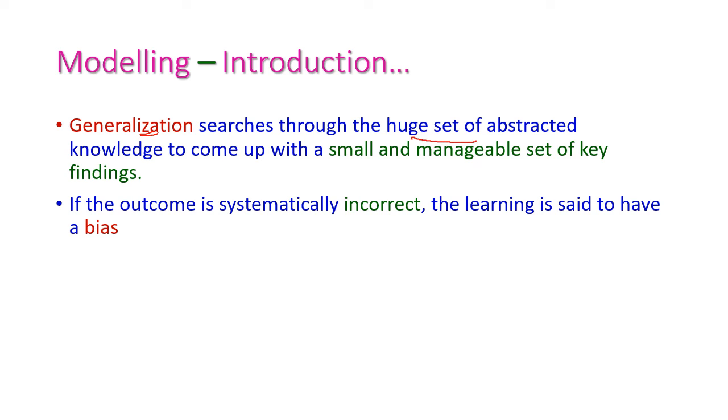And next is generalization. Search through the huge set of abstracted knowledge to come up with small and manageable set of key findings. Abstraction and knowledge are huge volume here. From the huge volume, we have to select the small and manageable set of key findings, which is our actual output. If our outcome is incorrect, then the learning is said to have some bias. If there is any error in learning, then we will get the incorrect output.